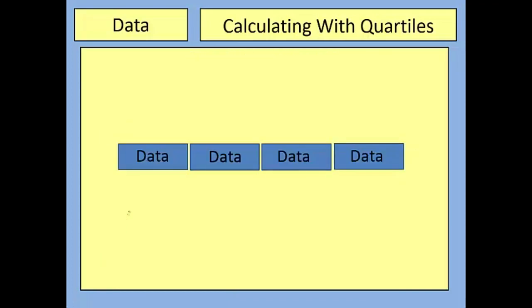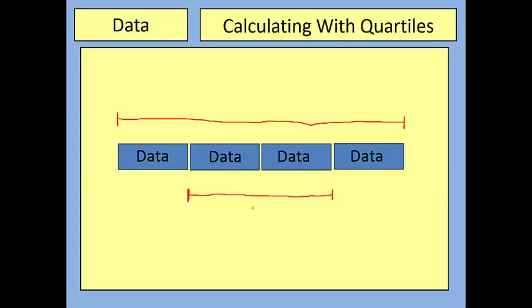There's only one more thing you need to be able to do. When we have data split into four sections, there are two other values we can talk about. The range is the distance from the minimum all the way to the maximum, calculated as the largest value minus the smallest value. However, there's another sort of range — from the lower quartile to the upper quartile — called the interquartile range, calculated as the upper quartile minus the lower quartile. We use IQR for short.